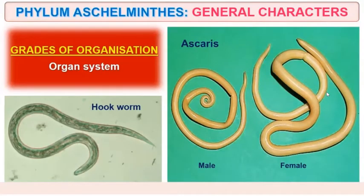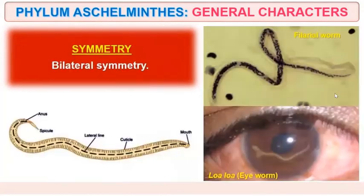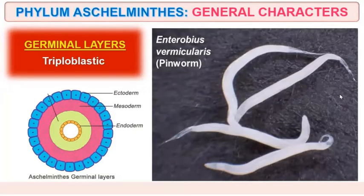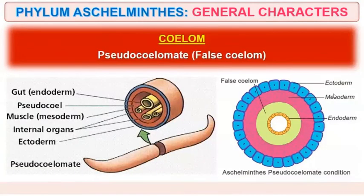The grade of organization — they show the organ system of organization. Symmetry is bilateral. They are the first organisms that show triploblastic organization.